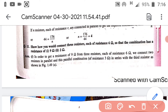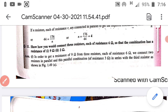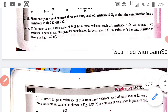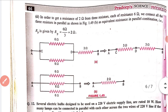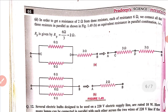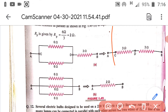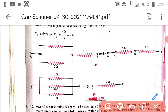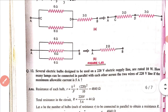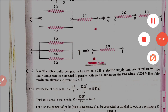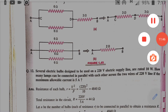So the parallel combination of two 6-ohm resistors gives 3 ohm, and connecting this in series with the third 6 ohm gives 6 + 3 = 9 ohm. For the second part, to obtain 2 ohm, connect all three resistors in parallel: 1/6 + 1/6 + 1/6 = 3/6 = 1/2, and the reciprocal of 1/2 is 2. So resistance of 2 ohm is obtained by connecting all three resistors in parallel.